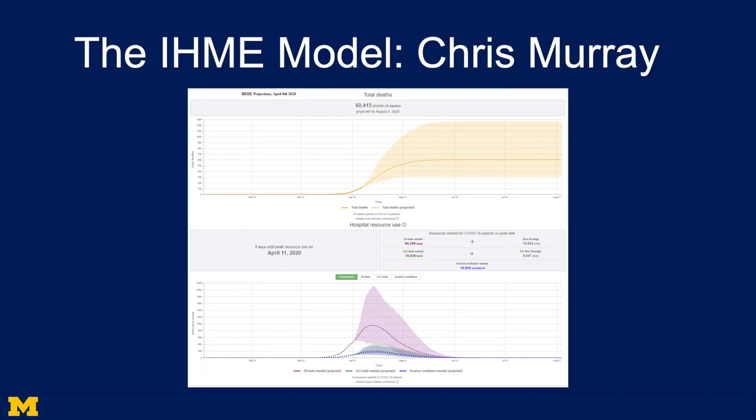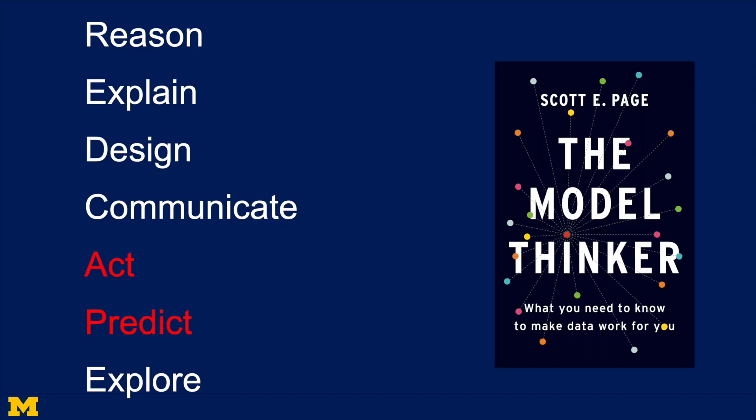The IHME model was developed by Chris Murray and his team. This is a model that has been incredibly useful in guiding action — federal action, state action, community level action. It's been able to do so by making predictions about the number of ICU units needed, the number of hospital beds needed, and the number of fatalities.